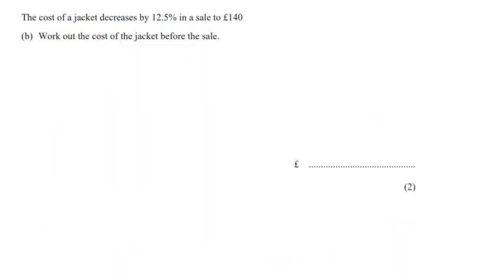For question B, we are told the cost of a jacket decreases by 12.5% in a sale to £140. Work out the cost of the jacket before the sale. So I'm just going to draw a quick little diagram to help us visualize what's going on.